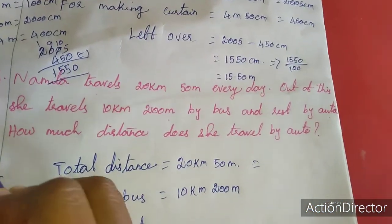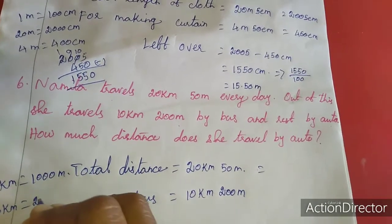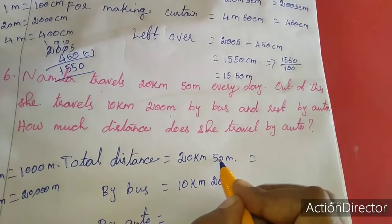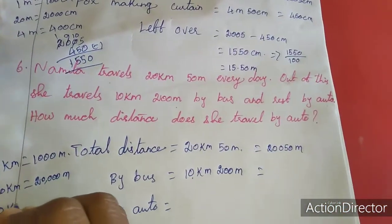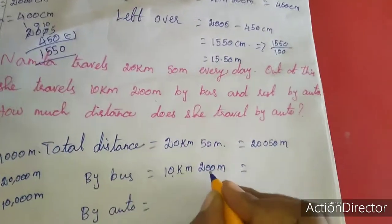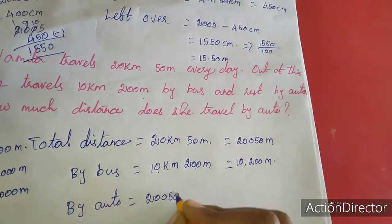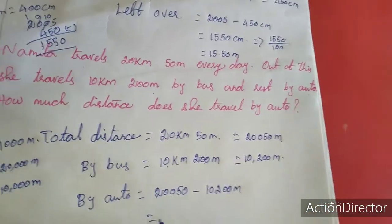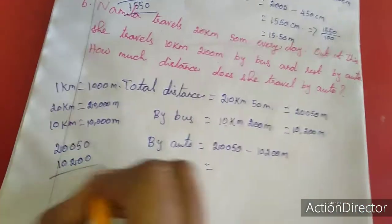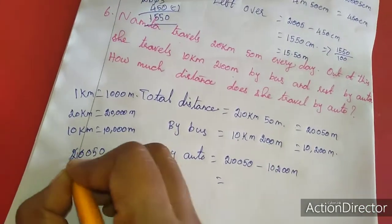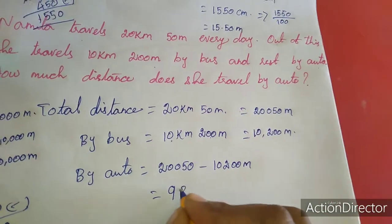1 kilometer equals 1000 meter. So 20 kilometer equals 20,000 meter, and adding 50 gives 20,050 meter. For the bus: 10 kilometer equals 10,000 meter, plus 200 gives 10,200 meter. So 20,050 minus 10,200. The subtraction gives 9,850 meter.